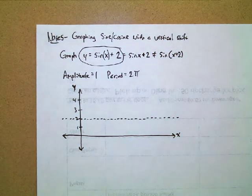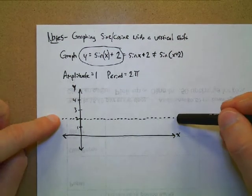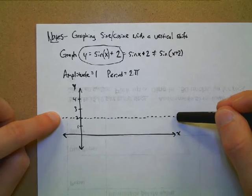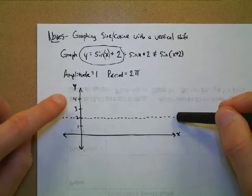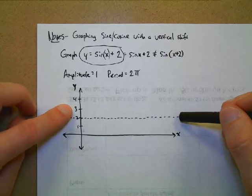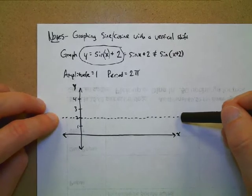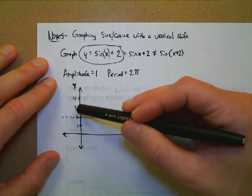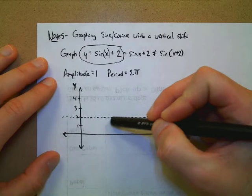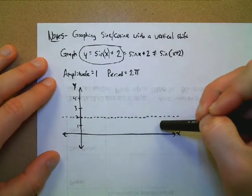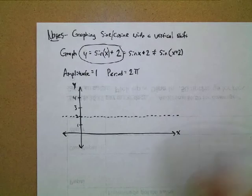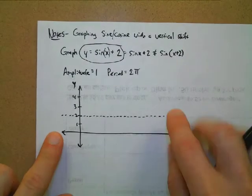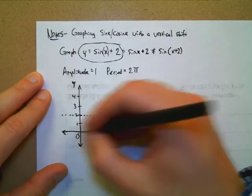If my wave is centered at two and my amplitude is one, the highest y value we're going to reach is three — centered at two, go up one. The lowest y value is one — going down one from two. So my wave will oscillate between three and one, and we'll never actually cross the x-axis. I'll start at zero and go out to two pi.